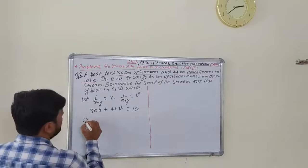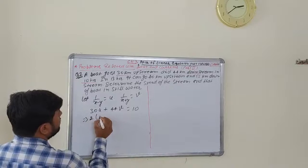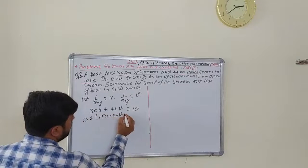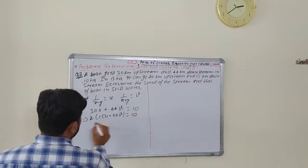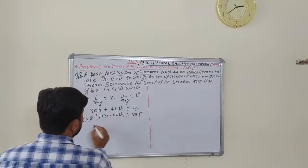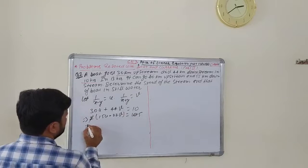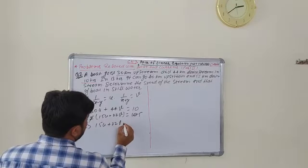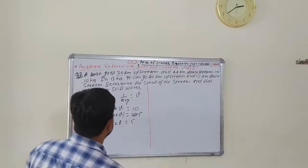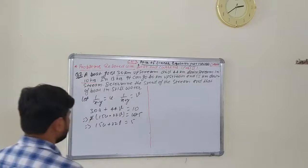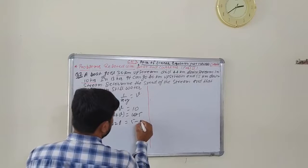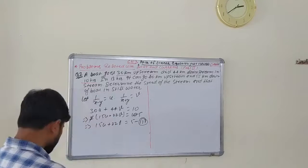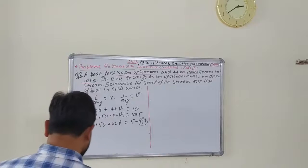Since u = 1/(x minus y) = 1/5, we get x minus y = 5. Since v = 1/(x plus y) = 1/11, we get x plus y = 11. These are our 5th and 6th equations.